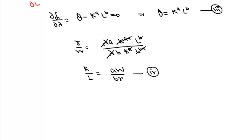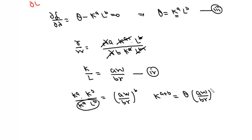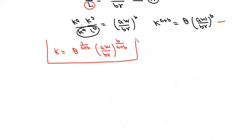From the fourth equation and the constraint K^a * L^b = q, we raise K/L = aw/(br) to the power b on both sides, giving K^b / L^b = (aw/(br))^b. Multiplying through by K^a and substituting K^a * L^b = q, we get K^(a+b) = q * (aw/(br))^b. Therefore, the cost-minimizing capital is K = q^(1/(a+b)) * (aw/(br))^(b/(a+b)).